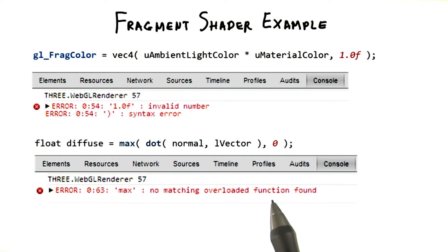Sometimes the errors are a bit cryptic. In this case, the zero should be 0.0. GLSL is very picky about having a floating point number have a decimal point.